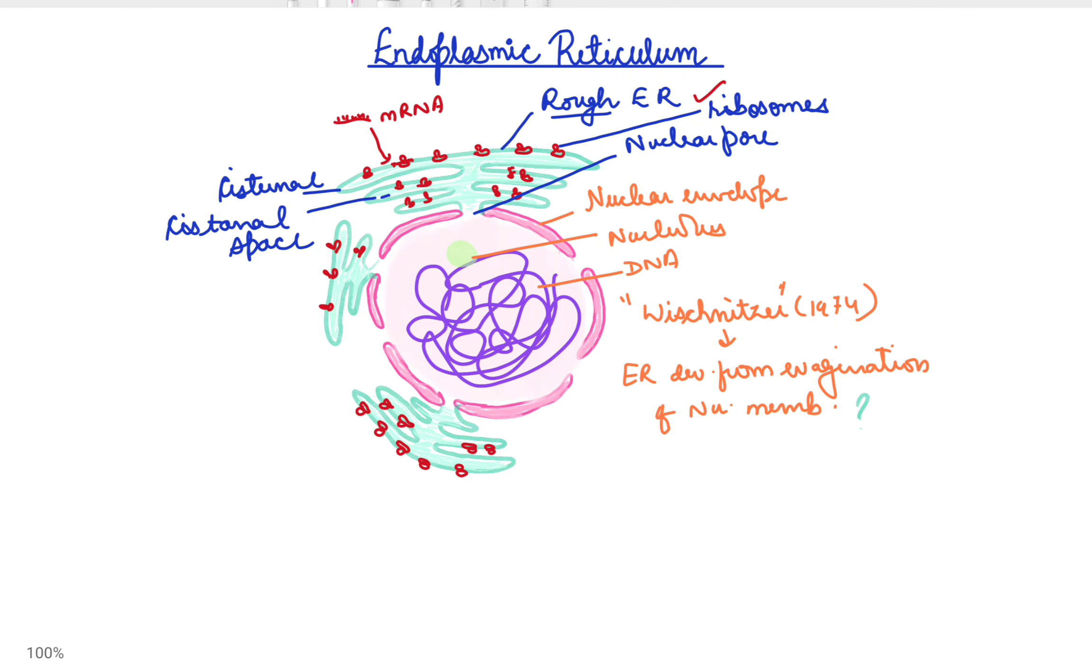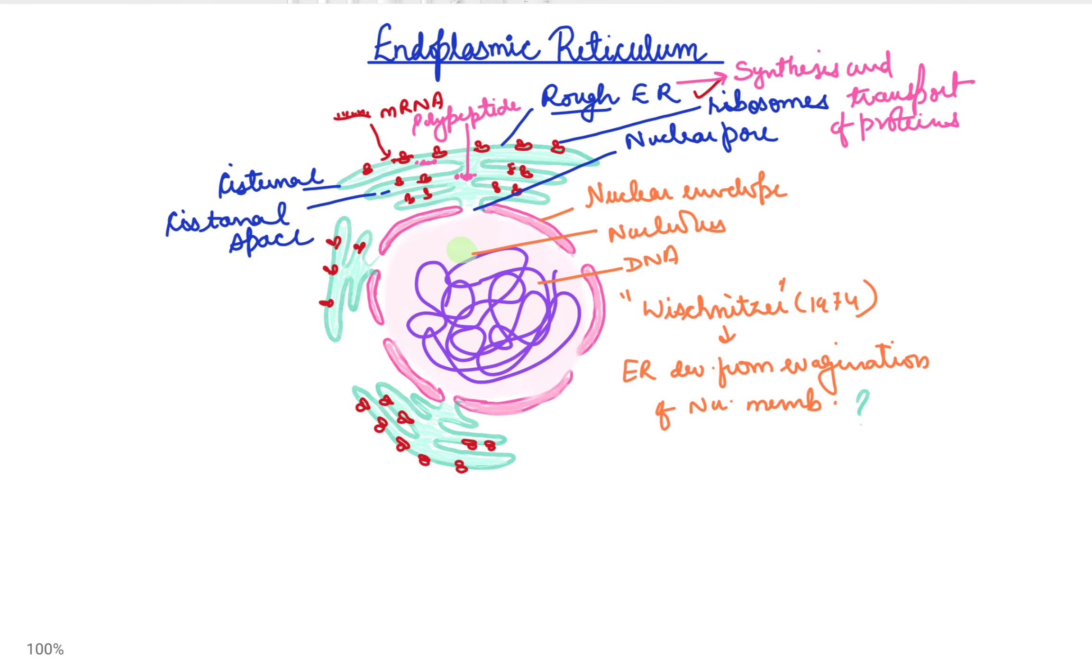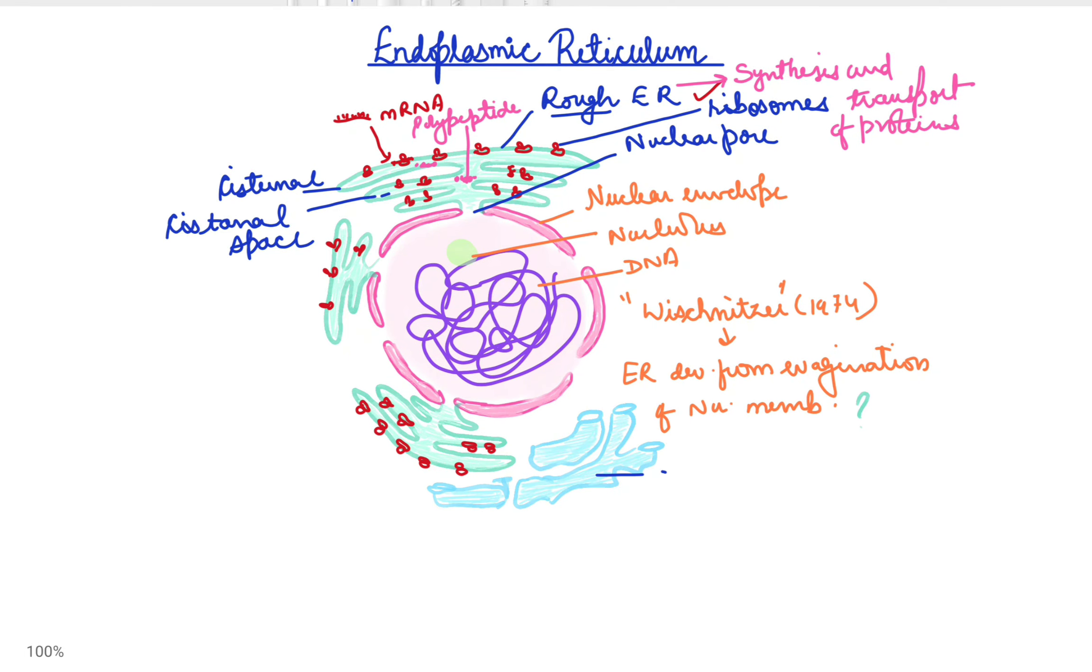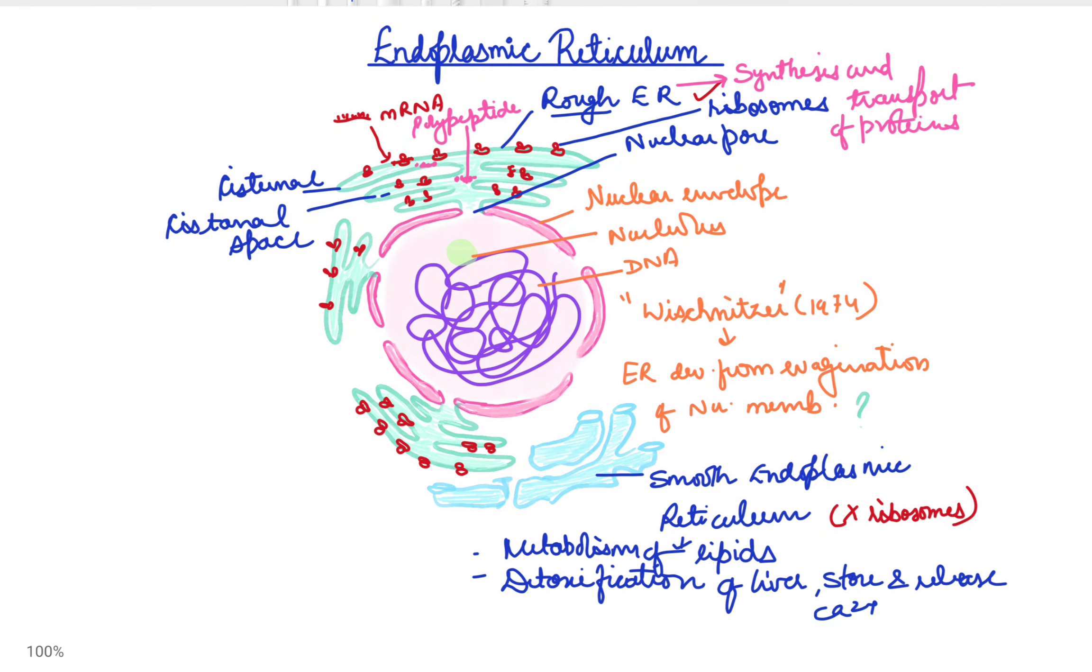Rough endoplasmic reticulum functions in the synthesis and transport of proteins. The other type of endoplasmic reticulum is the smooth endoplasmic reticulum. This smooth endoplasmic reticulum does not bear any kind of ribosomes and it functions in the metabolism of lipids, the detoxification of liver, etc.